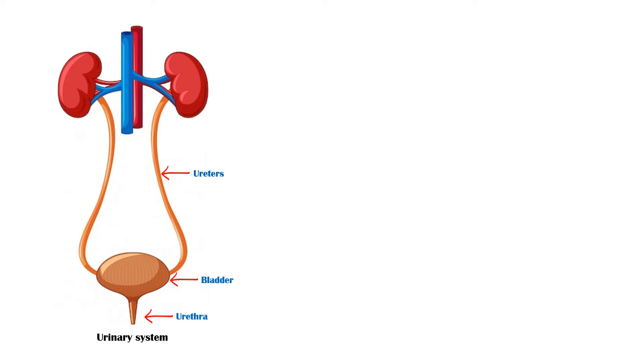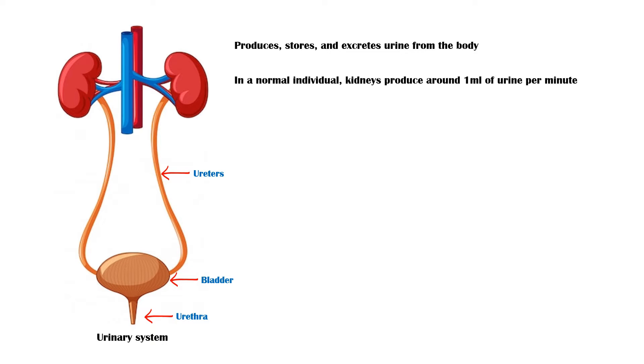The urinary tract system produces, stores, and excretes urine from the body. Under normal circumstances, kidneys produce about 1 mL of urine per minute.